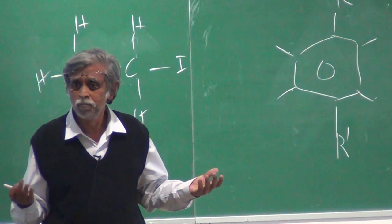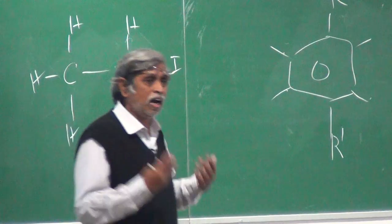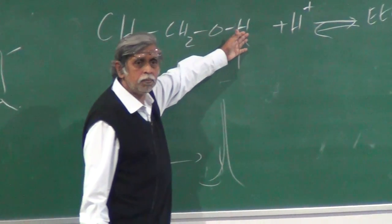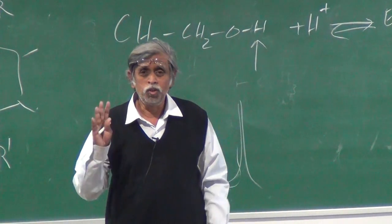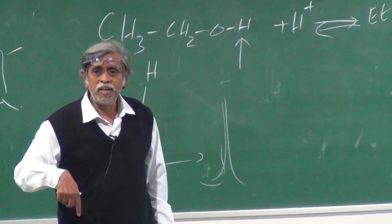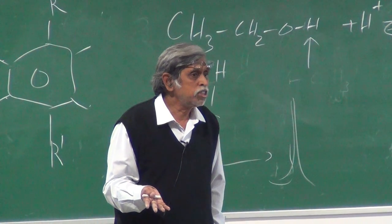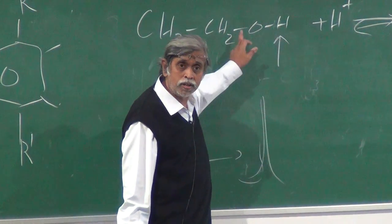Which essentially means that half the time, this proton is seeing this up and half the time, this is down. But this time scale is so small, on average, what you see is basically zero out there. Up and down on average is going to be zero. But you can't see a coupling associated with that proton. And that's the reason why this coupling is essentially destroyed in this case.